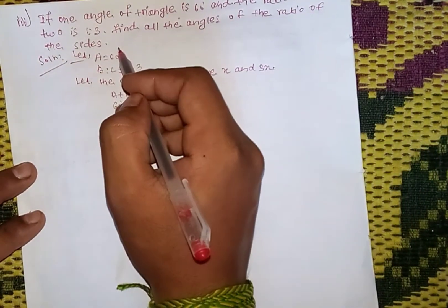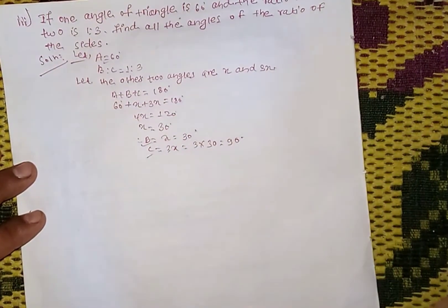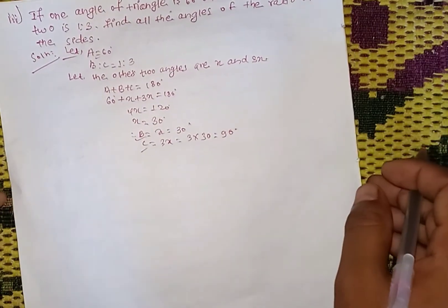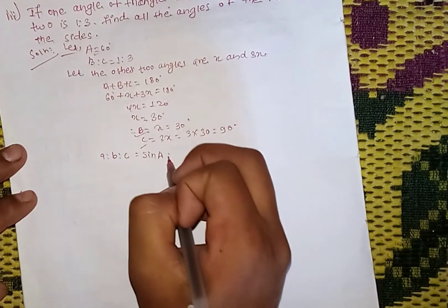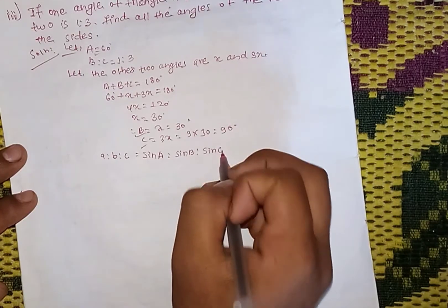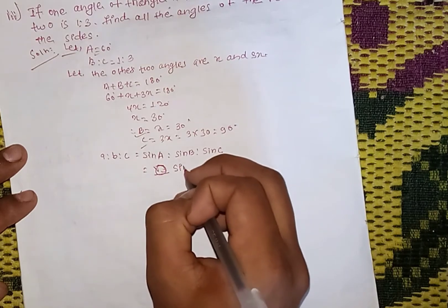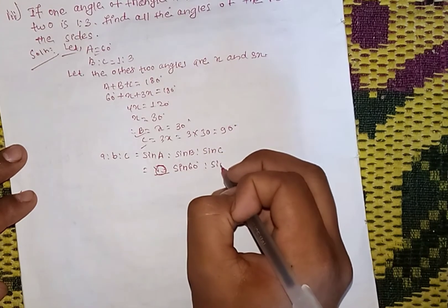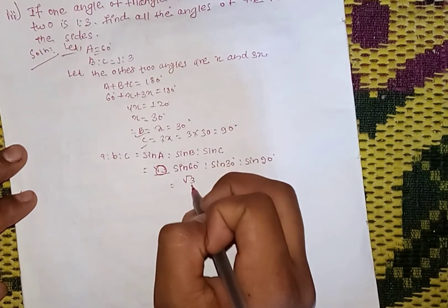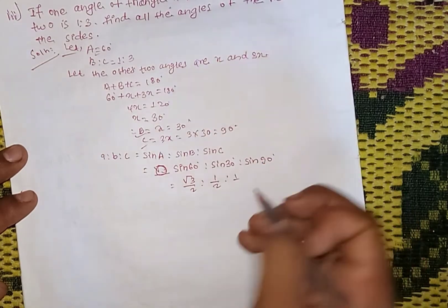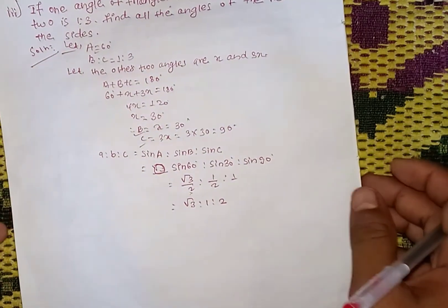Find all angles and the ratio of sides. A equals 60, B equals 30, C equals 90 degrees. Ratio: sin A is to sin B is to sin C equals sin 60 is to sin 30 is to sin 90. Sin 60 is root 3 by 2, sin 30 is 1 by 2, sin 90 is 1. So the ratio is root 3 is to 1 is to 2.